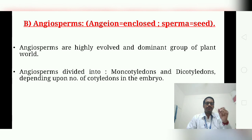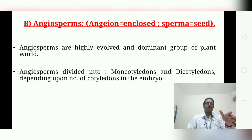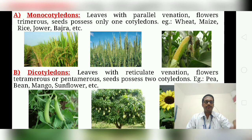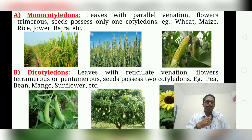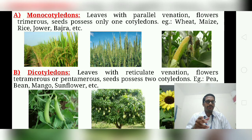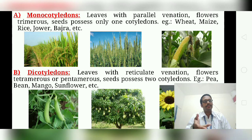Angiosperms are further divided into Monocotyledons and Dicotyledons, depending on the number of cotyledons in the embryo. In Monocotyledons, leaves have parallel venation, whereas in Dicotyledons, leaves have reticulate venation. Monocotyledon flowers are trimerous, whereas Dicotyledon flowers are tetramerous or pentamerous. Monocotyledon seeds possess only one cotyledon, whereas Dicotyledon seeds possess two cotyledons.